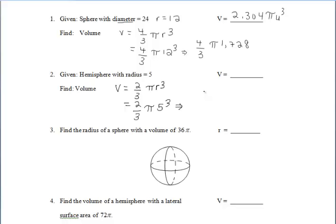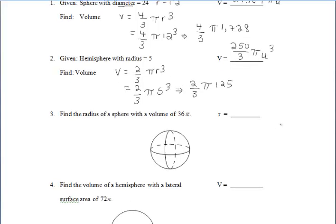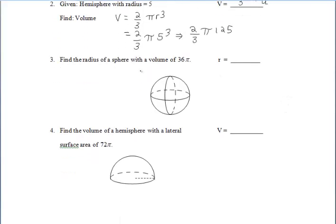For number two, since this is a hemisphere, we're doing 2 thirds pi 5 cubed. I'm going to cube the 5 first, which would leave us with 125, then multiply that by 2, which would be 250, and then divide it by 3, but since we can't divide it by 3 evenly, I'll leave it as an improper fraction of 250 thirds pi units cubed.